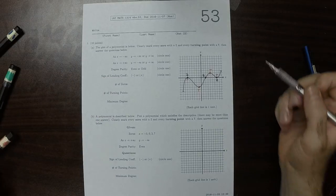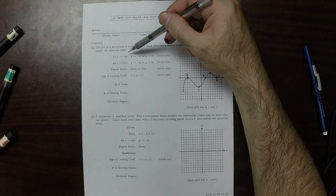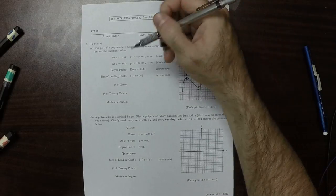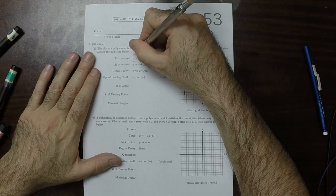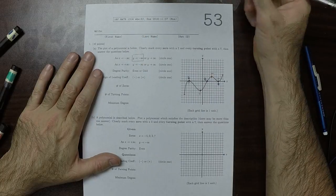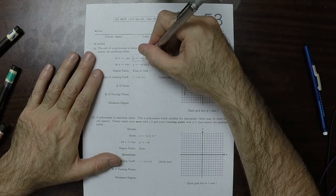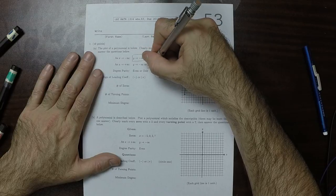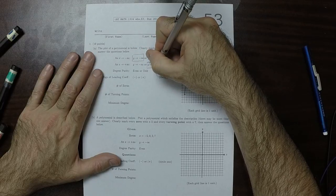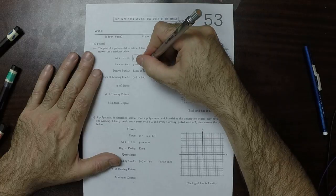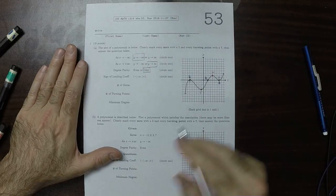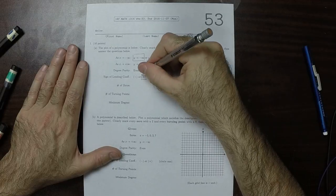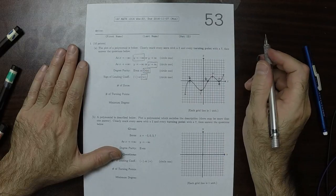Now each one of these we're supposed to circle. So as you go to the left, you go down, and as you go to the right, you go up. It has to be odd because the behaviors are opposite, left and right. The leading coefficient has to be positive because the right branch is going up.